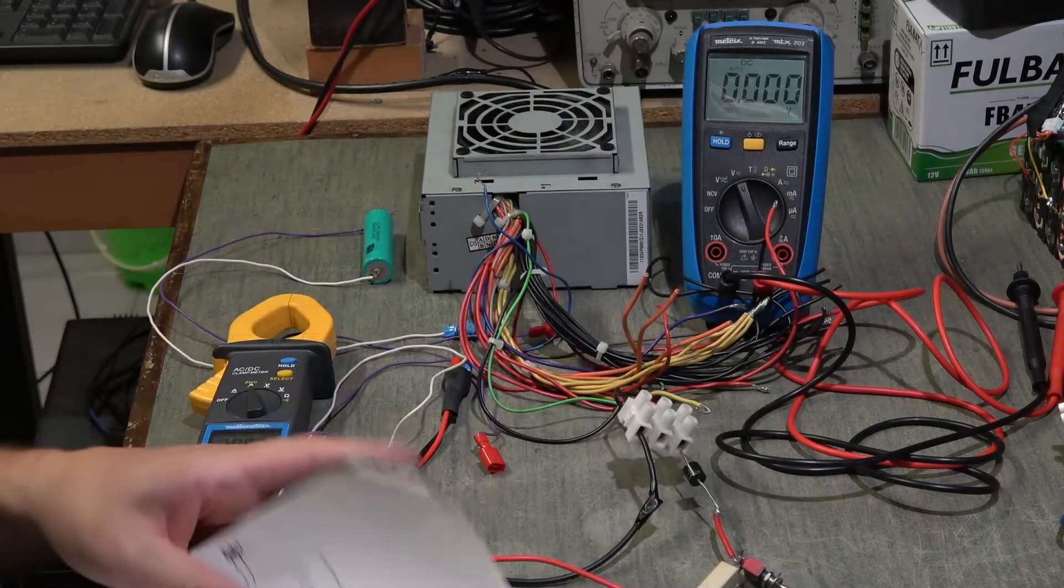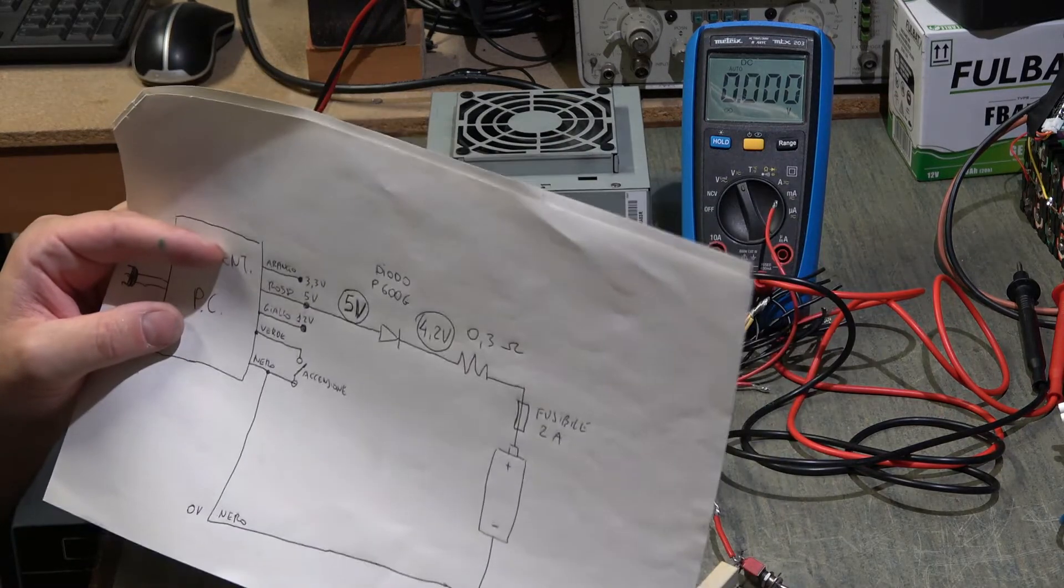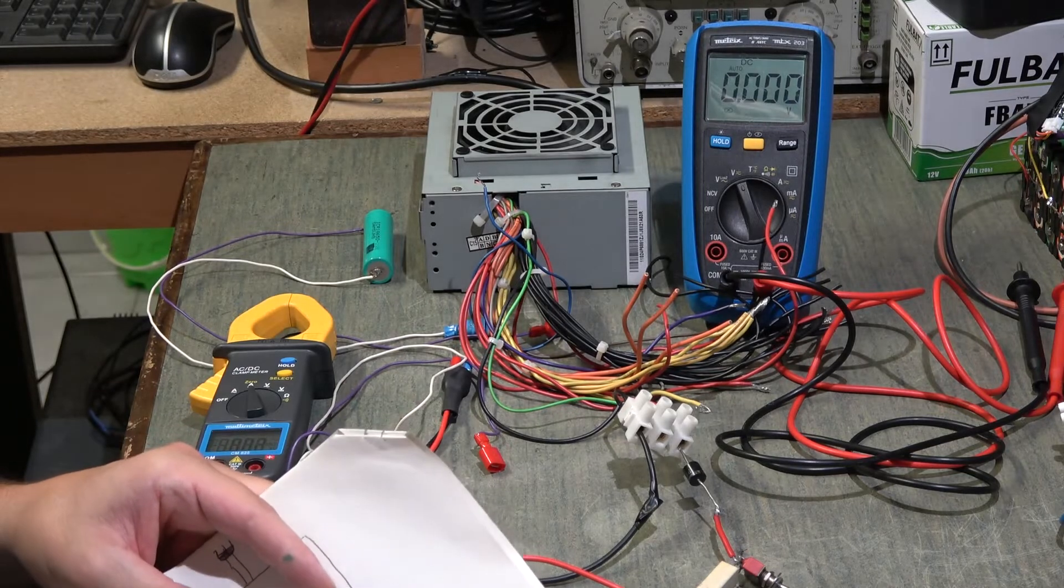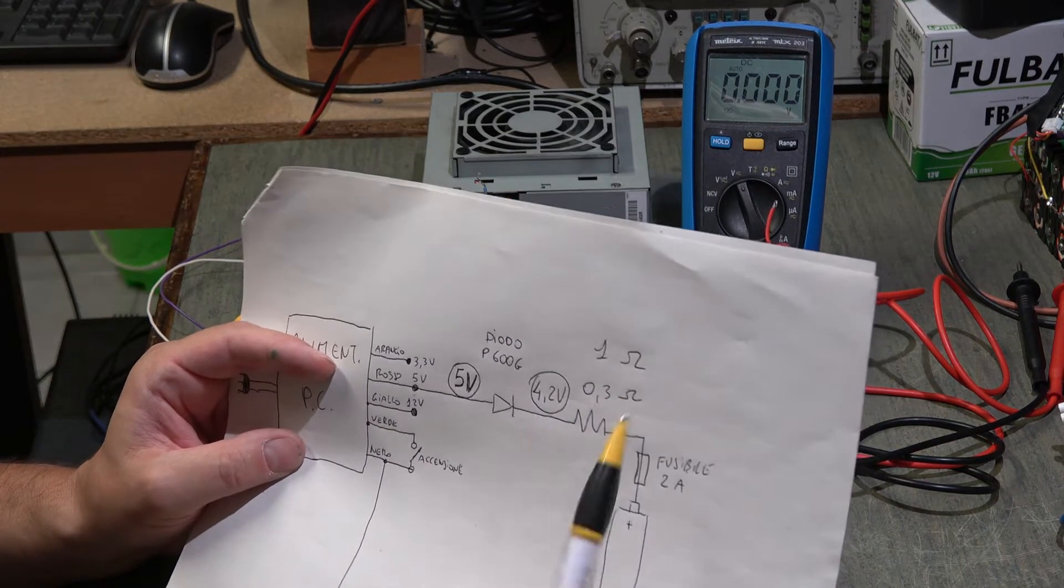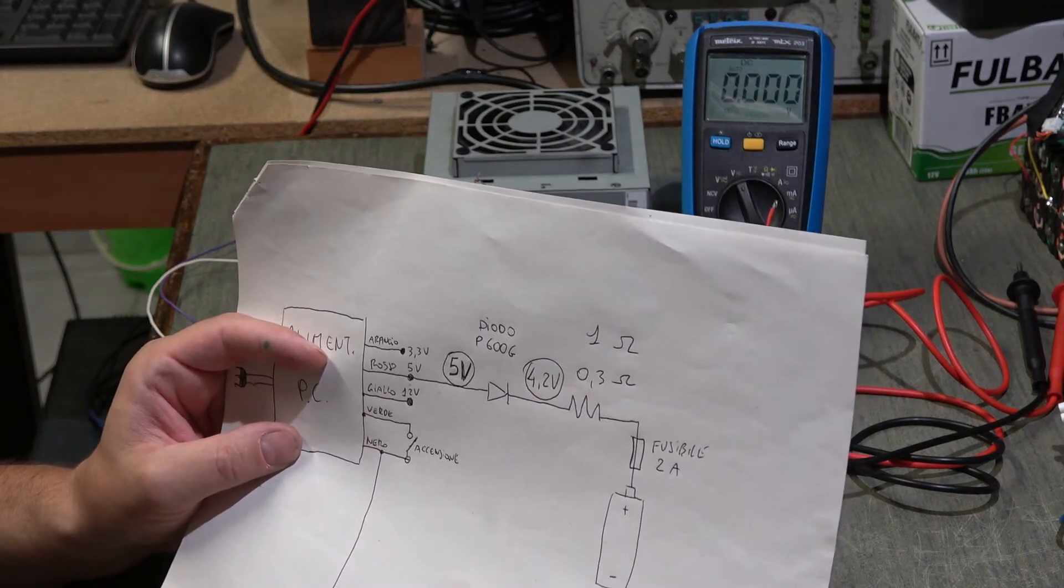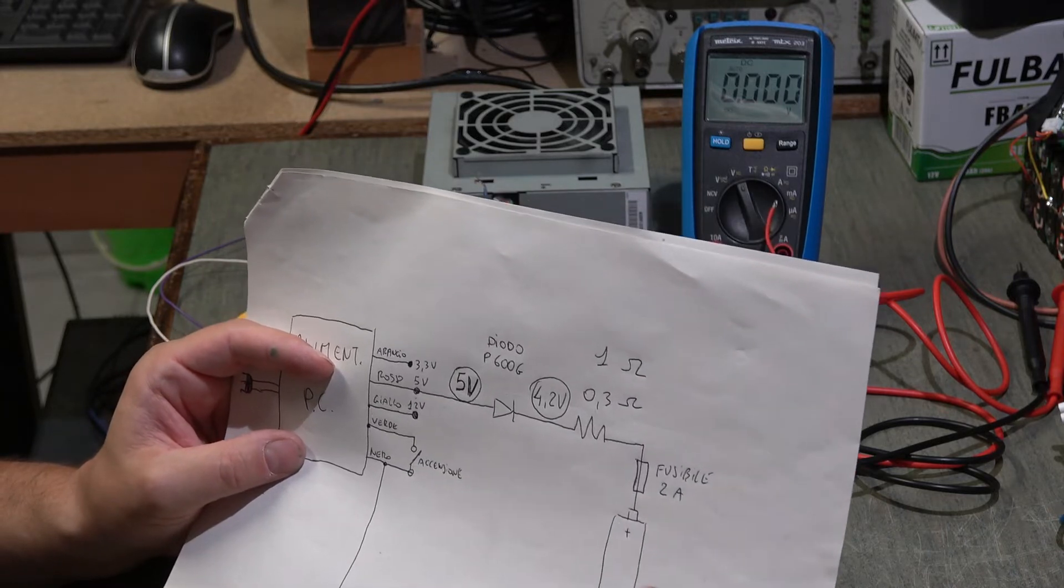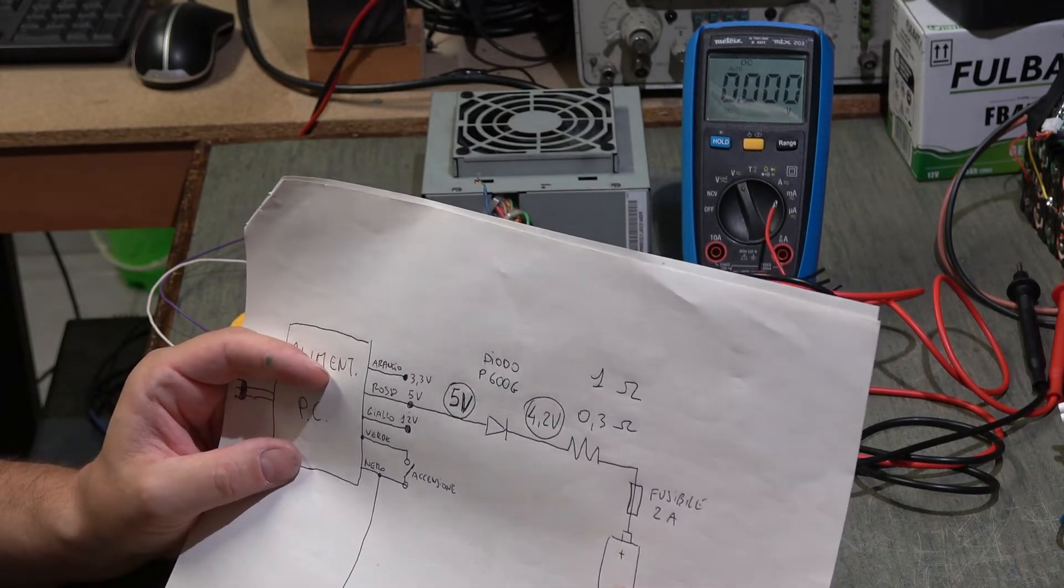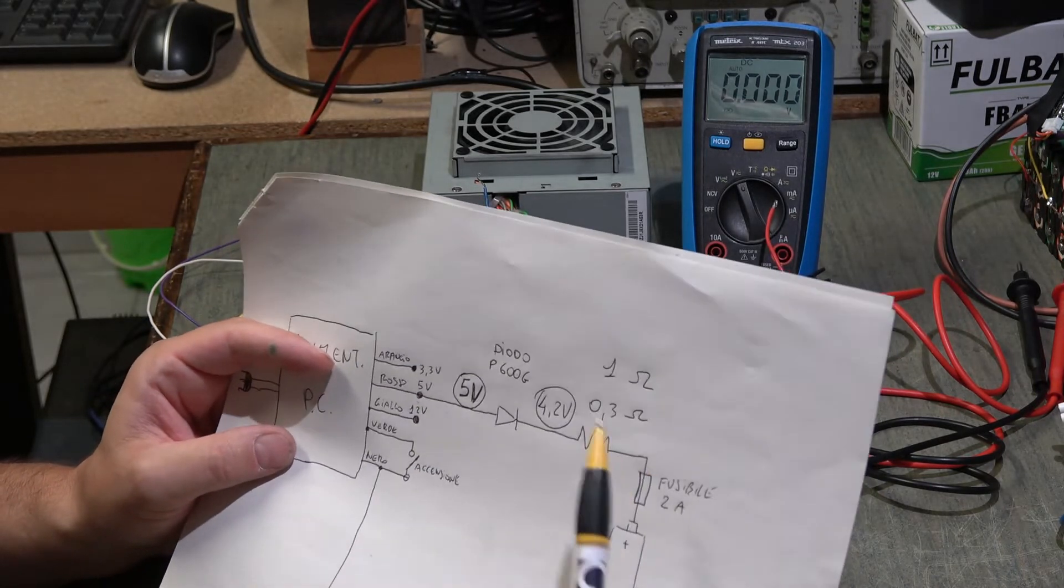Now I will show you with the resistance of 0.3 ohm, but you can also put 1 ohm. Logically with 0.3 ohm it will be charged with higher current. With 1 ohm it will be charged with lower current and will take much longer time. But with 0.3 ohm we will start now, with a current of about 2 amperes.